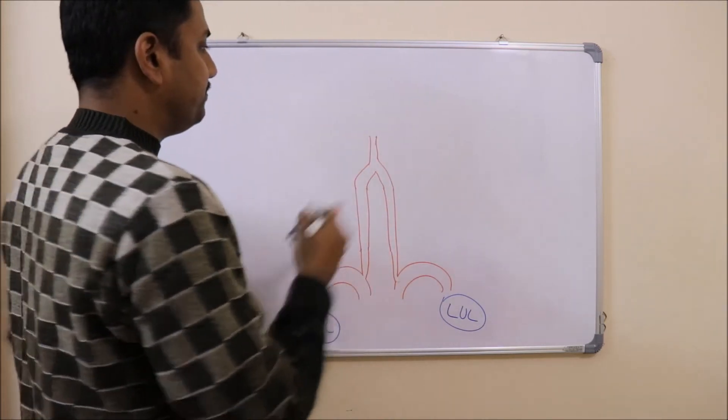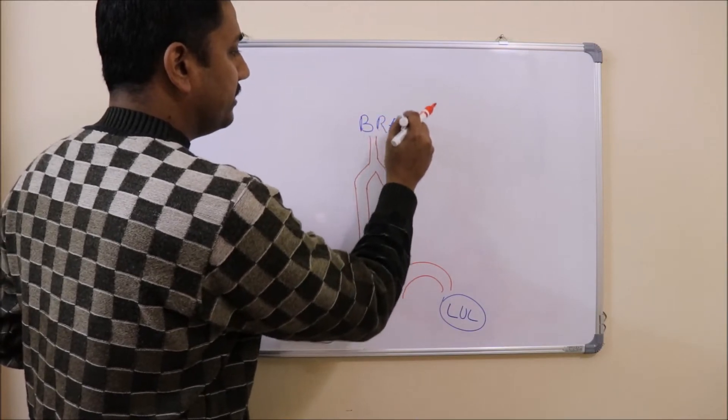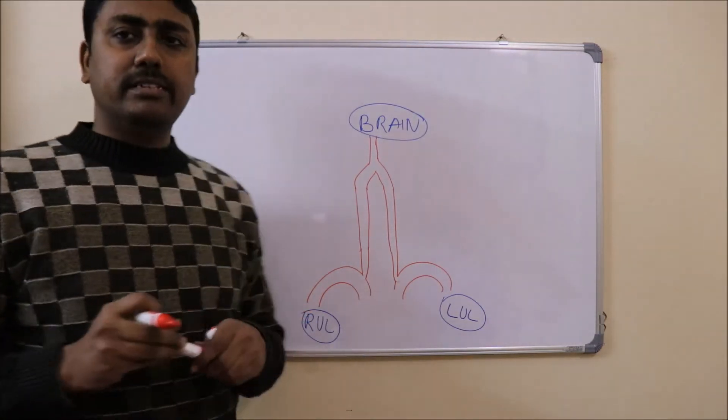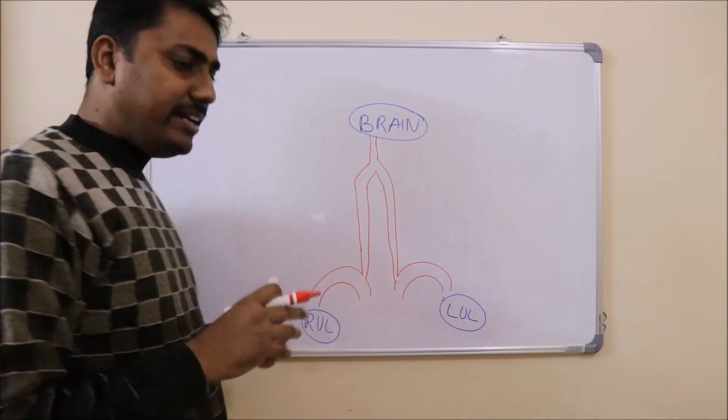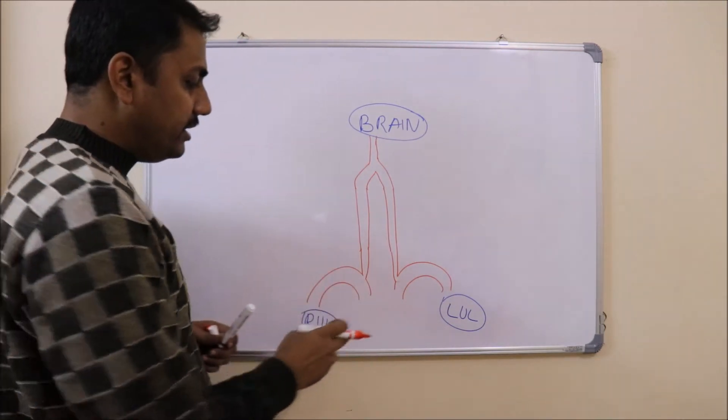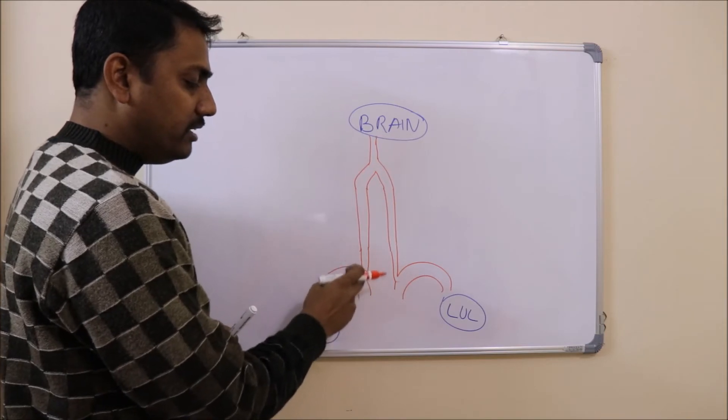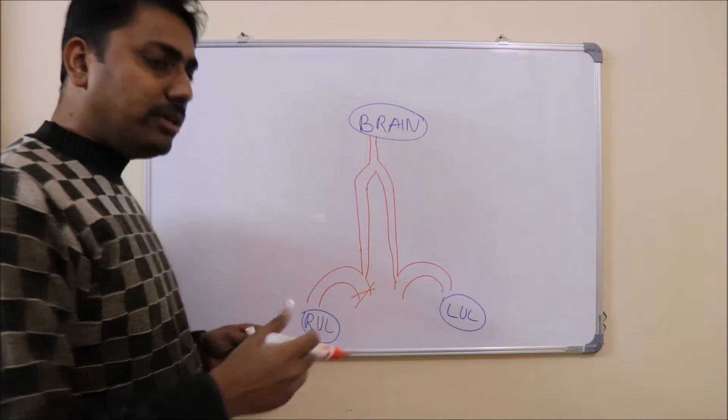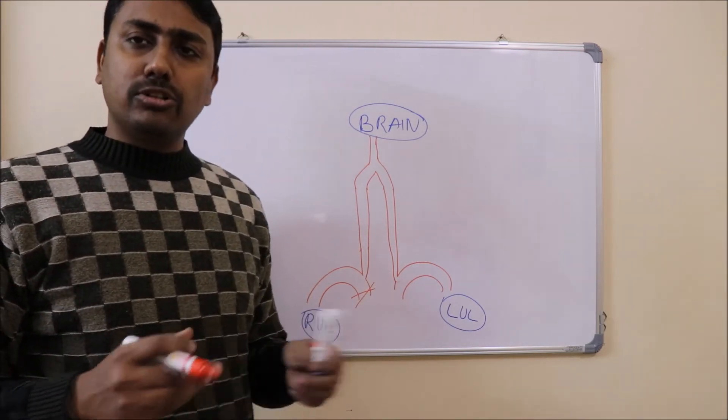Now what happens in the subclavian steal? Suppose there is an obstruction in the first part of the subclavian artery proximal to the origin of the vertebral artery. The cause of the obstruction could be a cervical rib or atherosclerosis at this level.